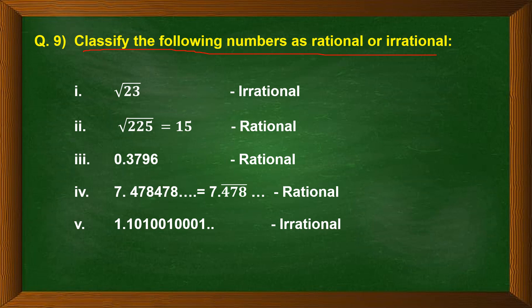The first one is root of 23. Now 23 is a prime number, and a prime number under a root will always have a non-terminating and non-recurring decimal expansion, so it's an irrational number. Root of 225 is equal to 15, so it's a rational number. 0.3796 is terminating decimal expansion, so it is a rational number.